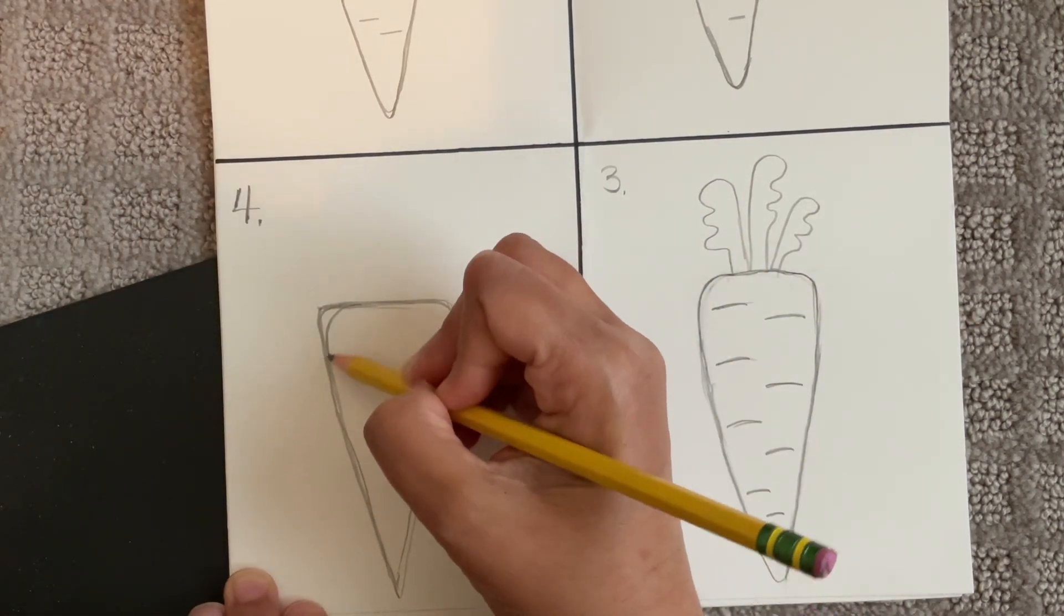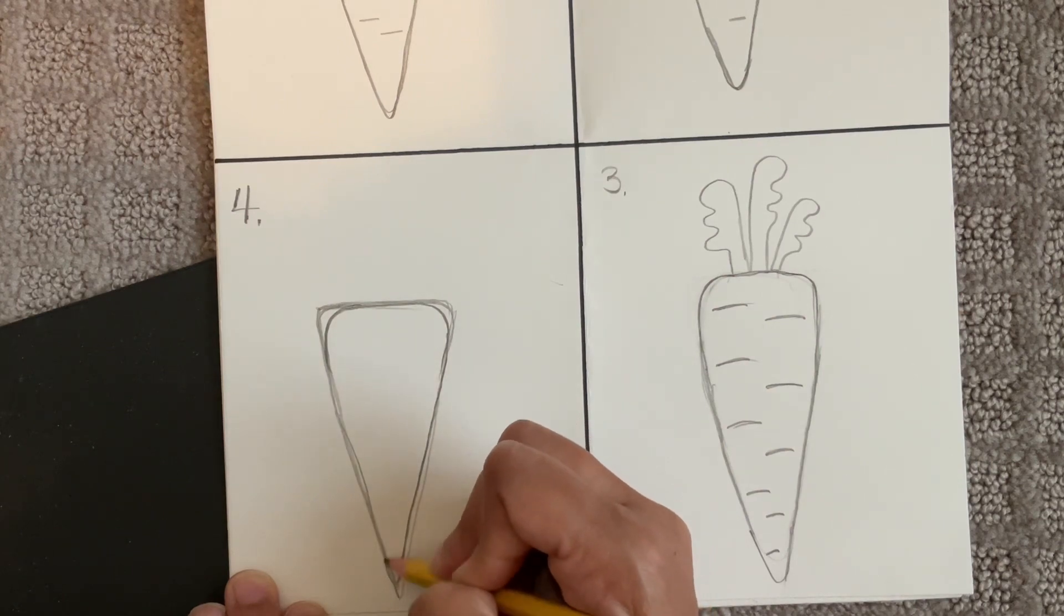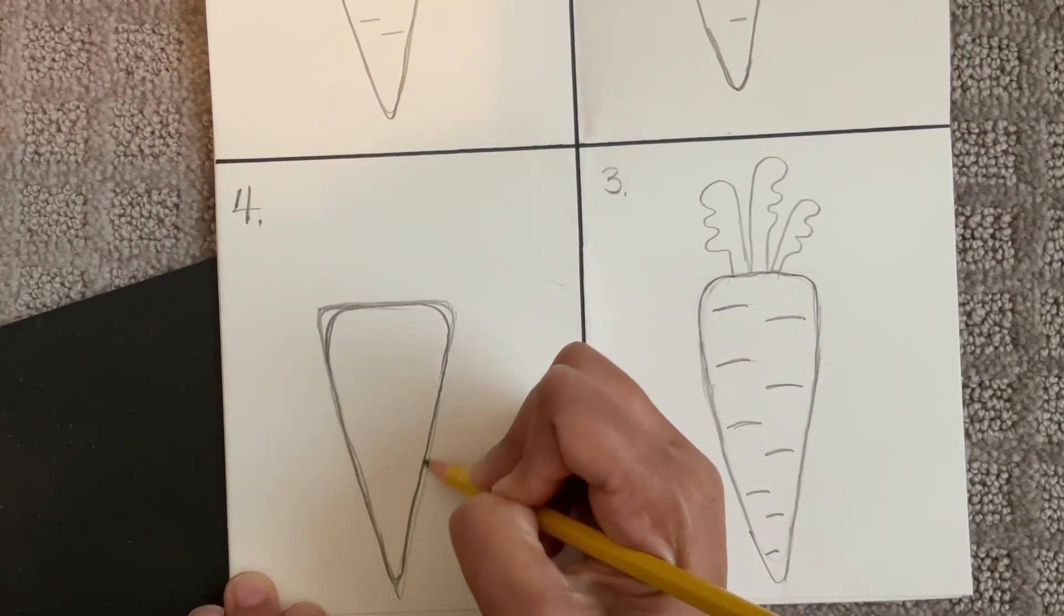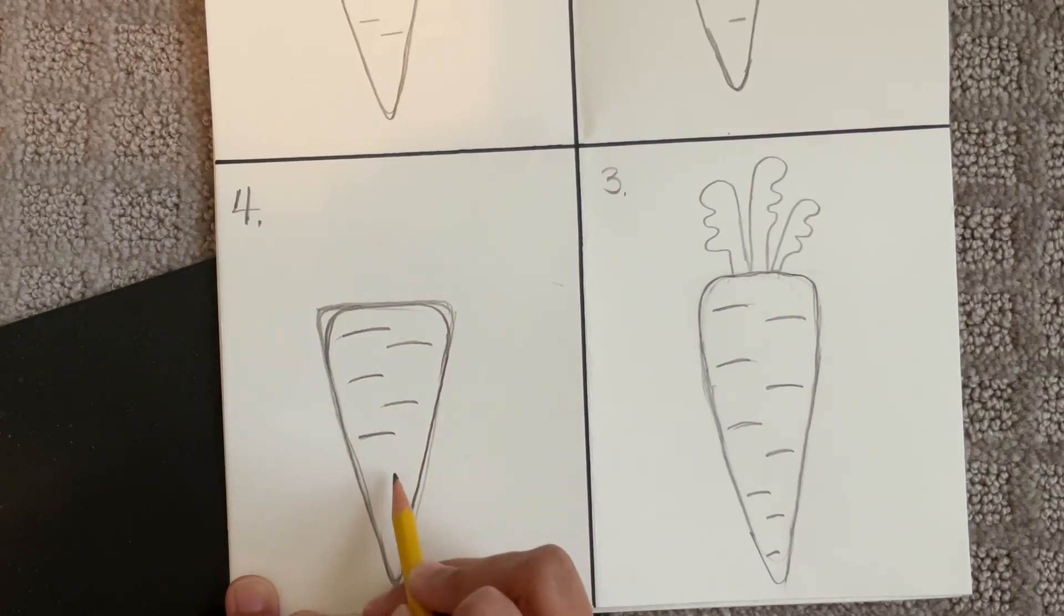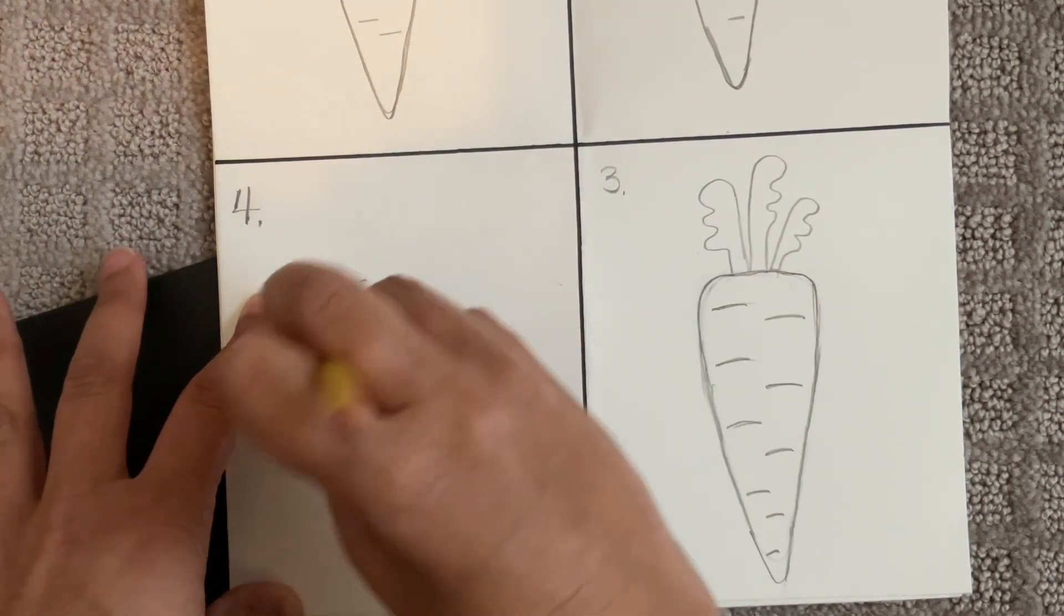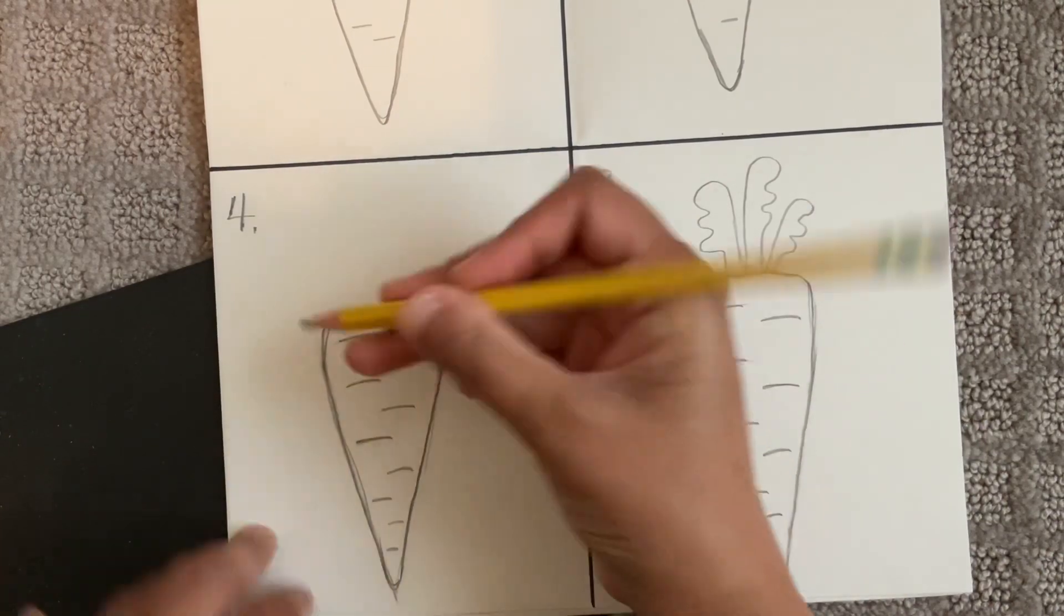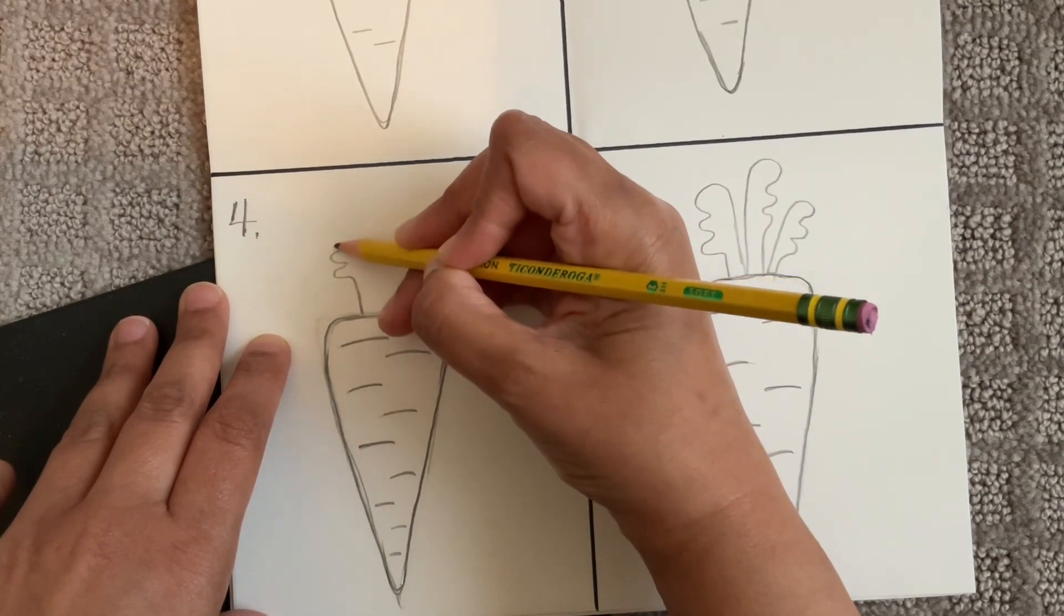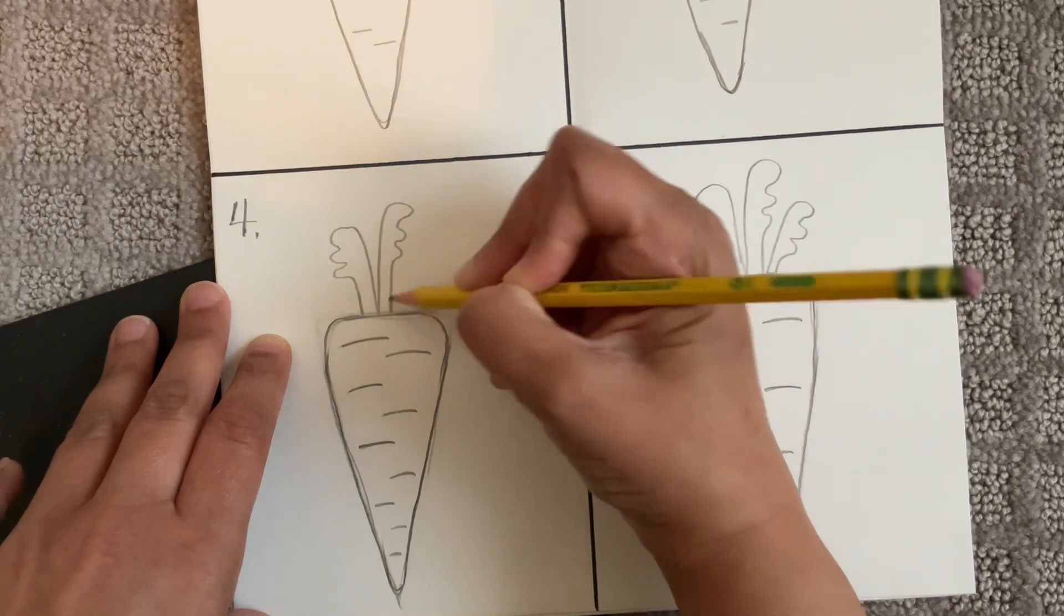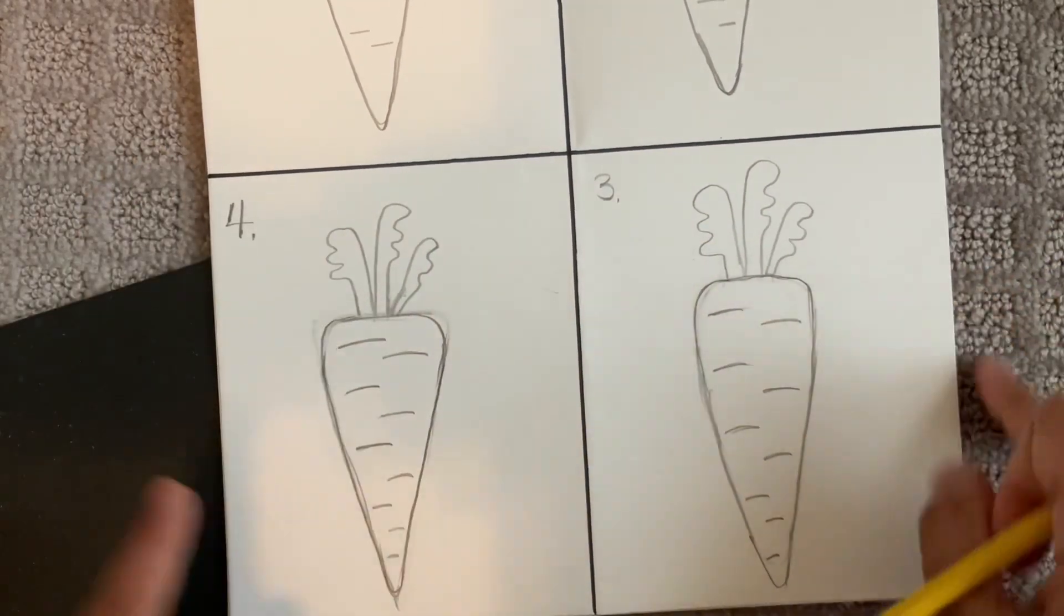And then I'm going to go in darker with my pencil. Curve it. Curve those lines. Take your eraser. Clean it up. And go in. One, two, three. One, two, three. One, two, three. Perfect. And look at that carrot that you've made.